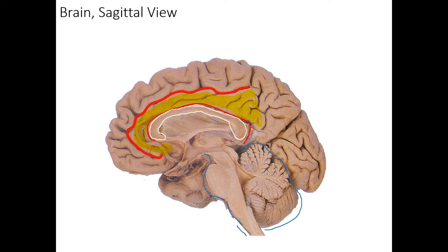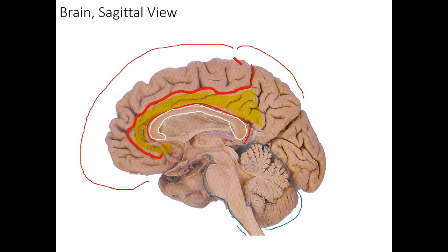The cingulate sulcus separates the cingulate cortex from the frontal cortex. The cingulate sulcus extends superiorly to form the marginal sulcus. Do not confuse the marginal sulcus with the central sulcus — these are different. The central sulcus does not extend deep into the mid-sagittal view. There is the central sulcus; it just appears as a little notch right there. You can see the parietal cortex extending from here to here, and the frontal cortex is anterior to that central sulcus. So the marginal sulcus is not dividing the frontal and the parietal cortices — be aware of that when looking at this view.